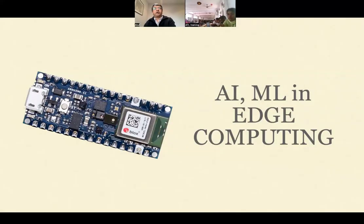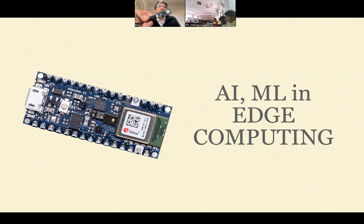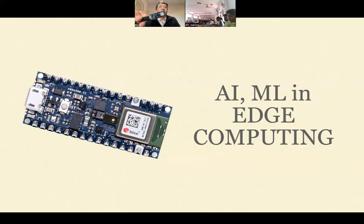Now we are moving on to this other board that we have, which is this BLE Nano 33 Sense Arduino board. This board is different from the earlier Arduino boards you may have used — Uno or Nano or whichever one — because this board is capable of a lot of IoT, Internet of Things projects, and a lot of AI/ML projects. Let's start with understanding the bigger picture and then we'll do some practical projects.